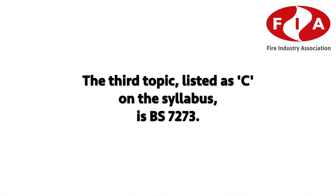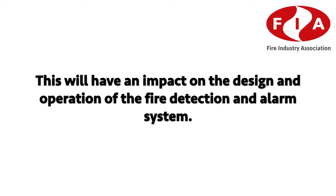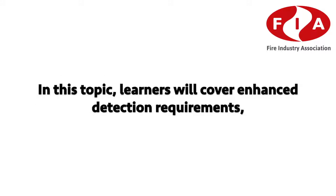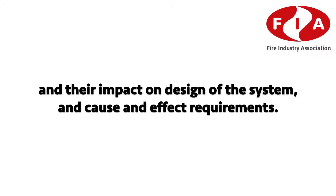The third topic, listed as C on the syllabus, is BS 7273. This series of standards covers the operation of fire protection measures and the interfacing such measures require to a fire detection and alarm system. This will have an impact on the design and operation of the system. In this topic, learners will cover enhanced detection requirements, categories and types of fire protection measures and their impact on system design, and their cause and effect requirements.